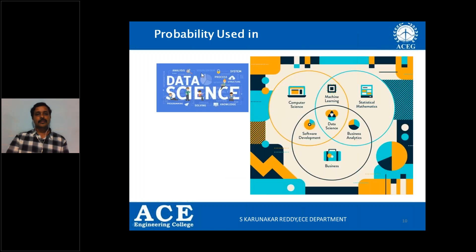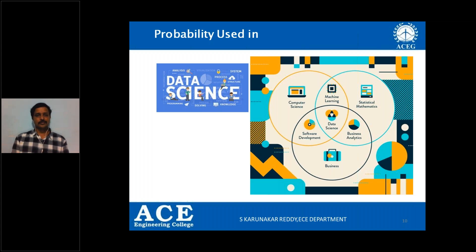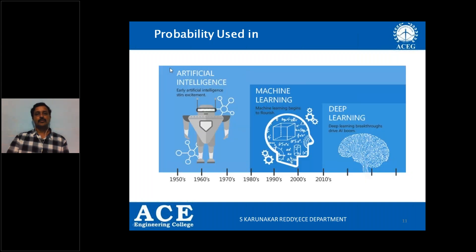One more area where probability is a basic subject is data science. In data science, a lot of probability is involved, and data science is a booming area right now that is going to last for more than 20 years. That is the reason why the government has decided to give a B.Tech degree in data science. Another area where the government has decided to give a degree in engineering is artificial intelligence and machine learning, where we also use a lot of probability concepts.